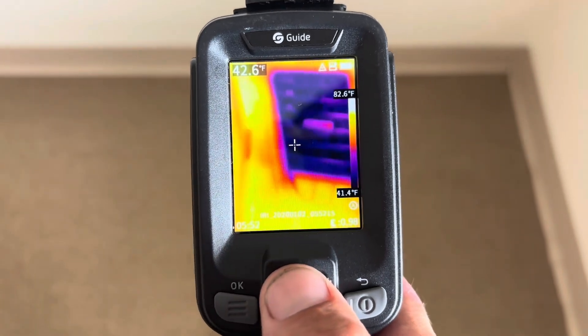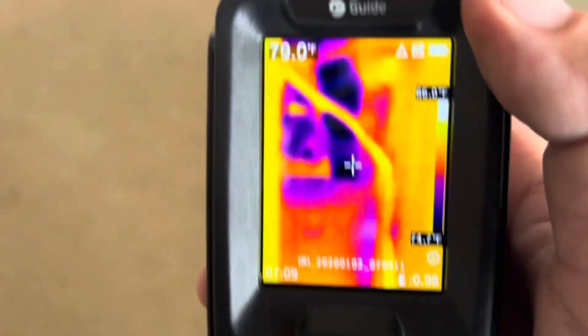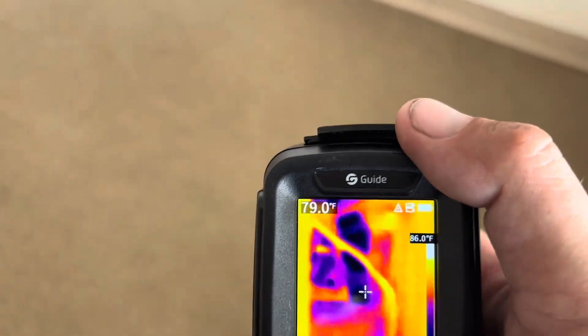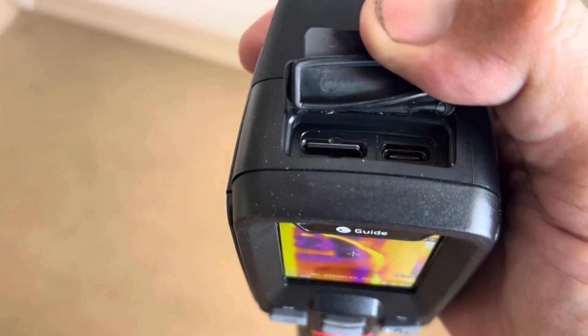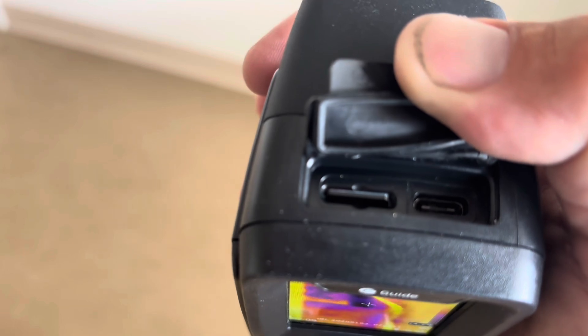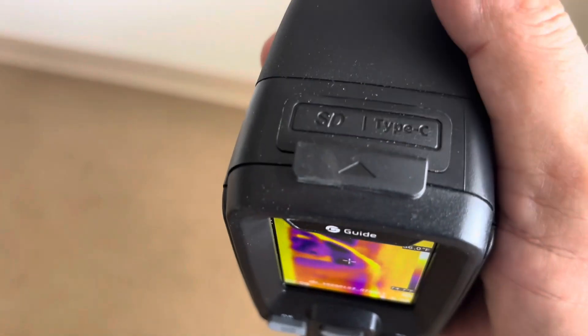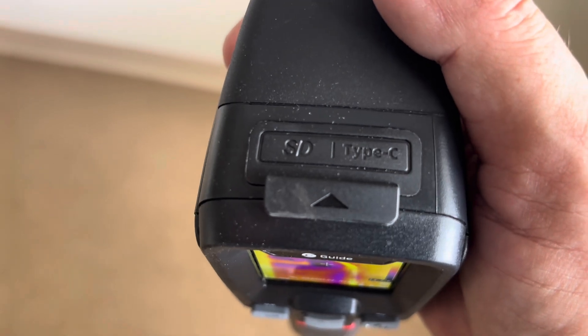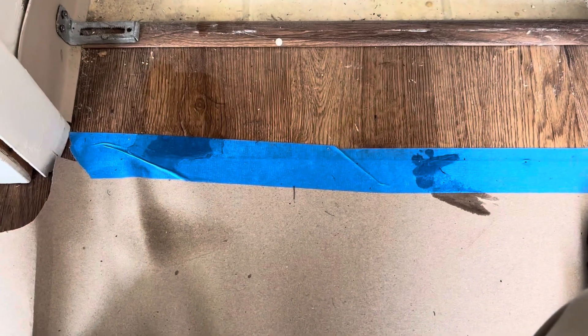Now if we want to transfer our pictures to our computer, we're going to open this up, pull the SD card out which is right there, and put it in your computer and transfer them and share them however you want. This is also the slot to charge the device.